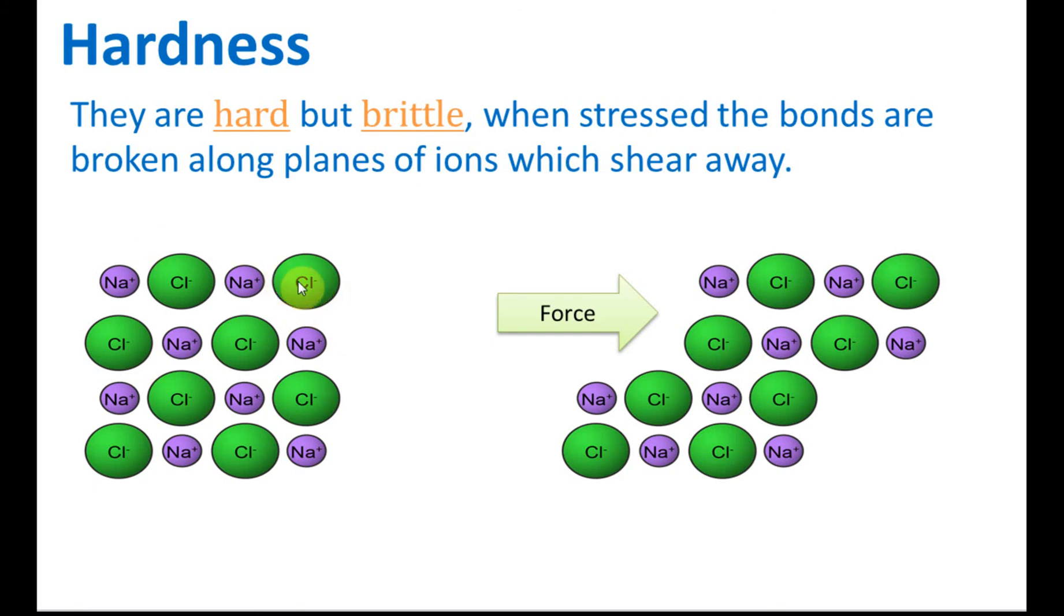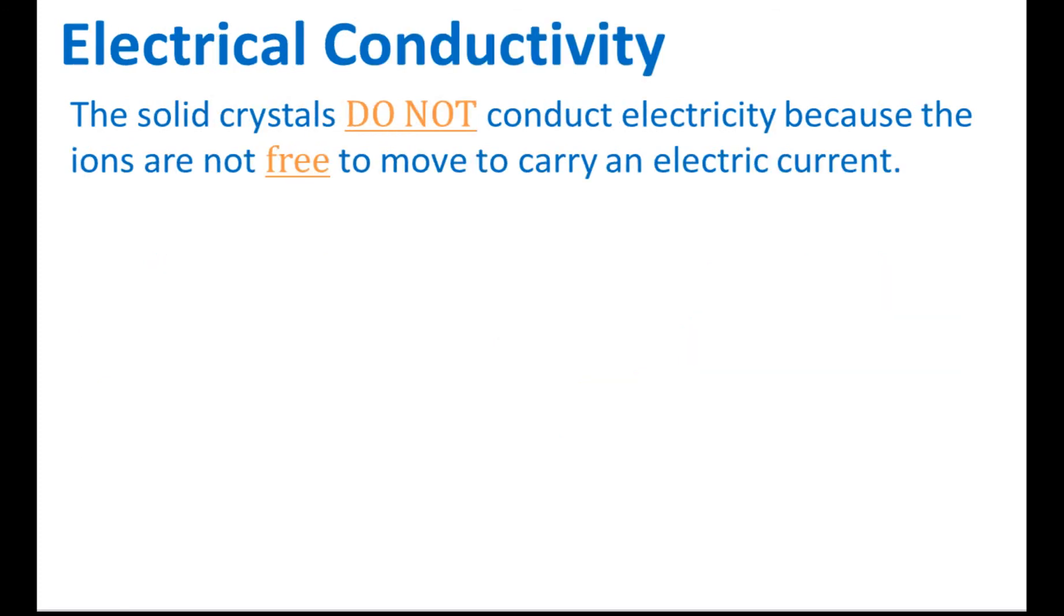For example, this is the arrangement of ions inside an ionic compound. If a force is given, they are in layers. So if a force is given, then this layer can slide on each other easily and this makes it brittle. So they are hard but they are brittle. Hard means it's difficult to make a scratch on its surface but brittle means that it can be broken easily.